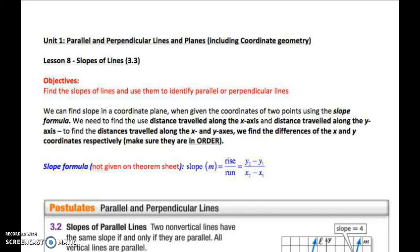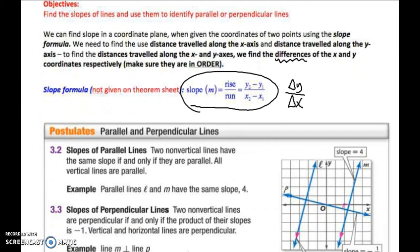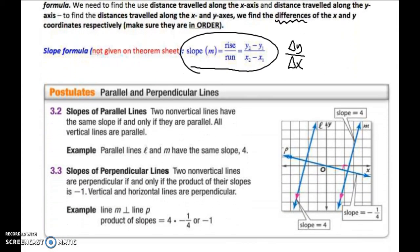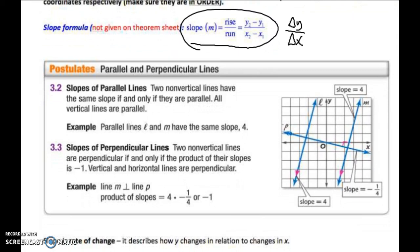This should be a review from your Algebra 1 class, or whatever math class you took last year. We're going to talk about the slope formula, which is right here. Remember, slope is rise over run, or it's the change in y divided by the change in x, or the distance traveled along the y-axis divided by the distance traveled along the x-axis. When you're finding the distance, you are finding the difference. So the difference between the y values divided by the difference between the x values. This is not given on the formula or the theorem sheet, so you need to memorize that.